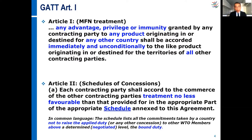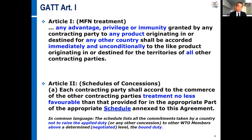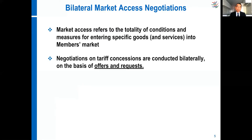So we would use those two articles to consolidate the bilaterals on goods for acceding members. Market access refers to the totality of conditions and measures for entering specific goods into members' markets. The negotiations are done on a tariff line basis. They are conducted bilaterally — the acceding member with a specific WTO member — and those two parties would have to exchange what we call offers and requests.